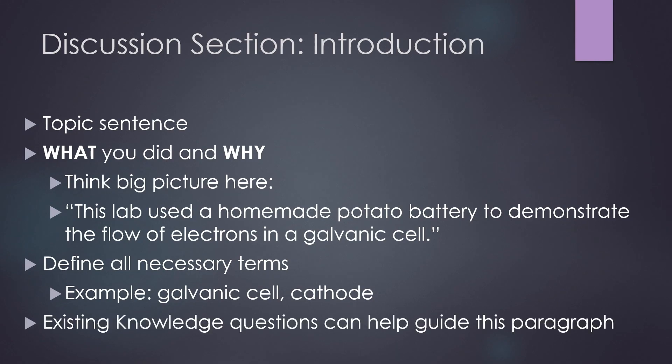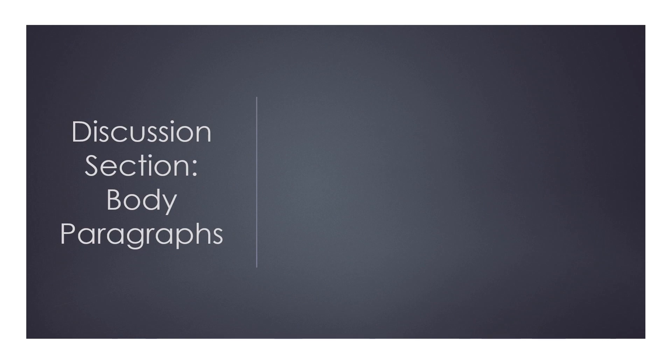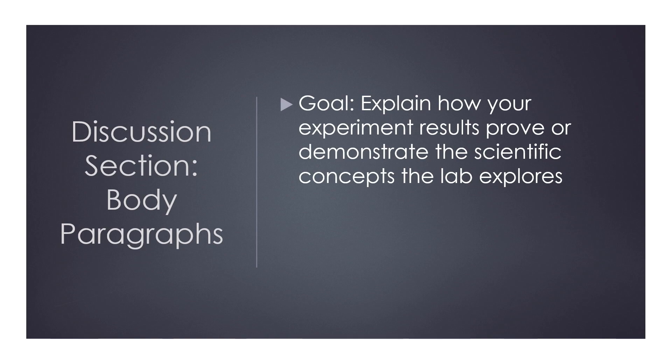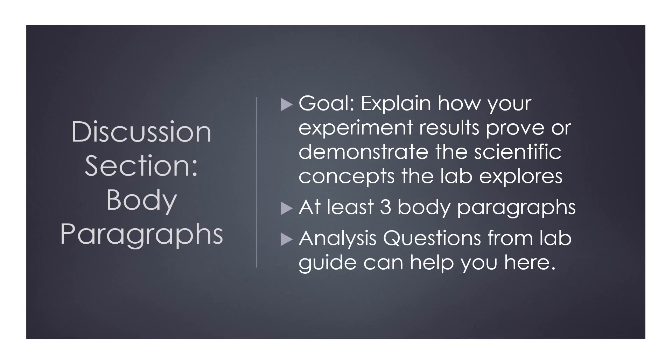If you feel stumped, try reading through the existing knowledge questions in the lab guide to get an idea of what kinds of questions you might want or need to answer. Remember that you should have at least three body paragraphs in your discussion section. Your goal is to explain how your experiment results prove or demonstrate the scientific concepts the lab explores. In other words, you'll take your data and your observations from the experiment, and then you'll explain how they support or how they don't support the major theories or concepts that you're studying in class. If you feel stuck here, you can look to the analysis questions in your lab guide and work from there.